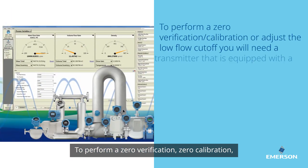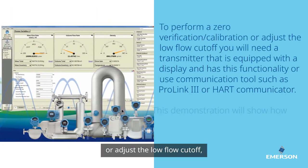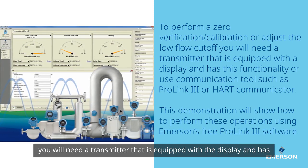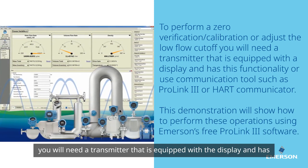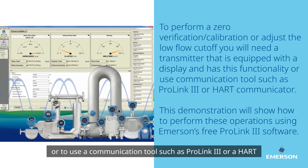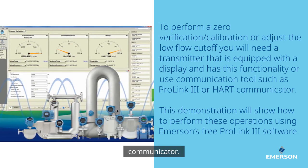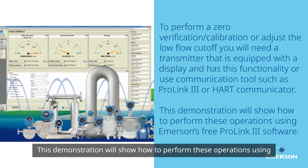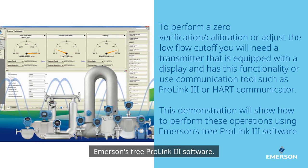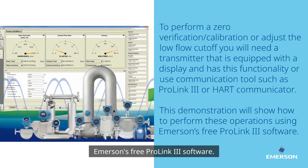To perform a zero verification, zero calibration, or adjust the low flow cutoff, you will need a transmitter equipped with a display and this functionality, or a communication tool such as ProLink 3 or a HART communicator. This demonstration will show how to perform these operations using Emerson's free ProLink 3 software.